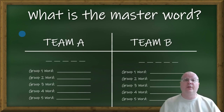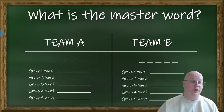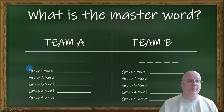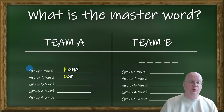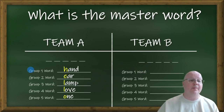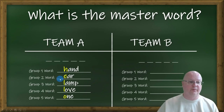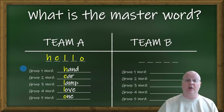When they are done, they need to run to the board and write down all six words, starting with group one — hand, group two — ear, group three — lamp, group four — love, group five — one. And then the master word starts with the first letters of all the group words — in our case, it is HELLO.